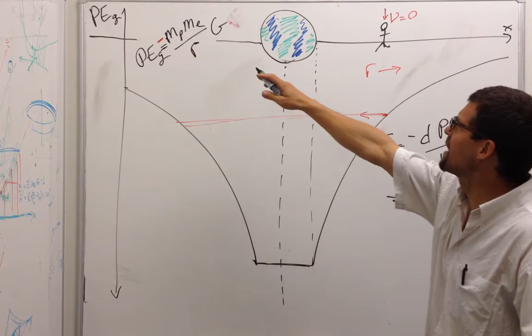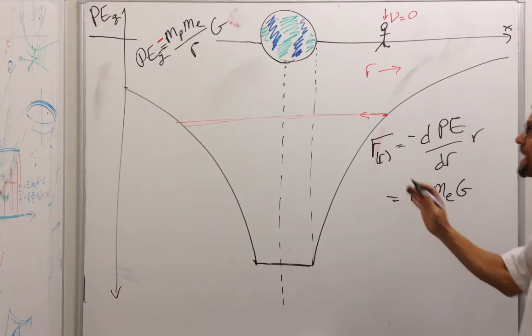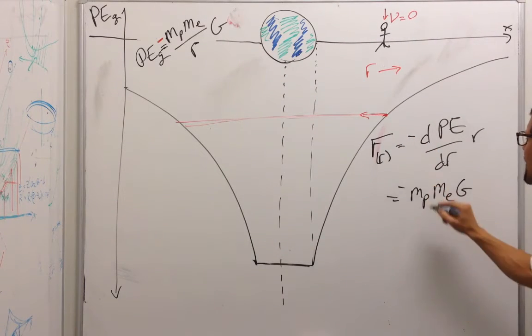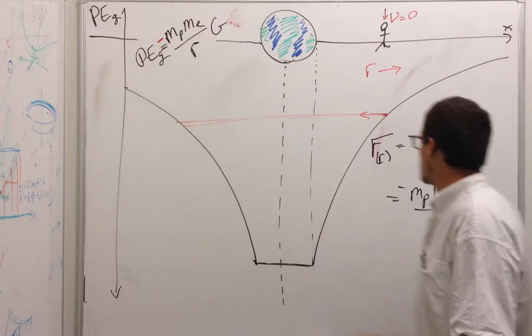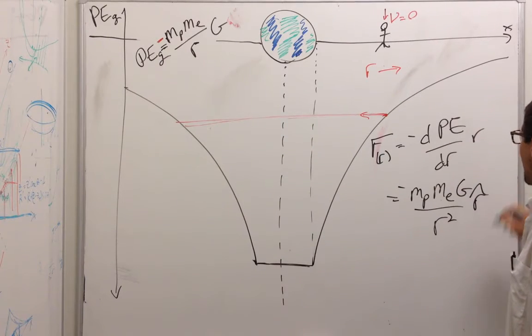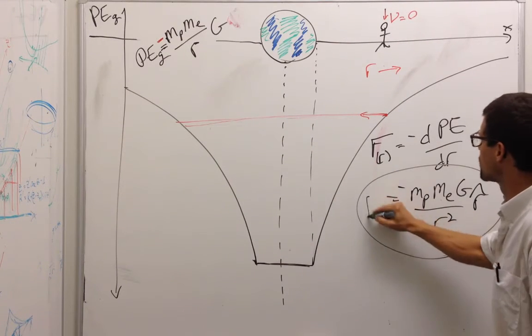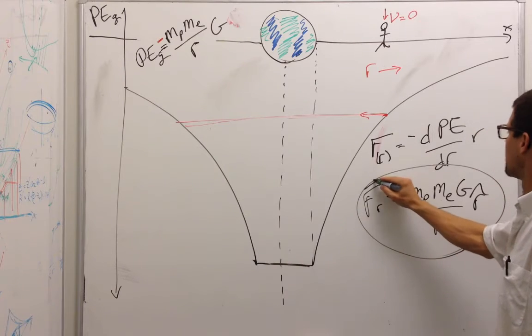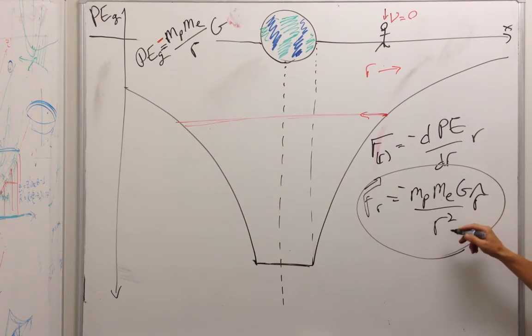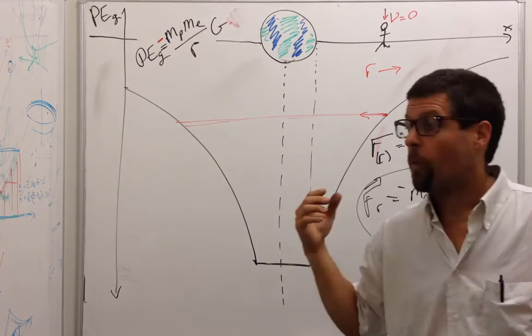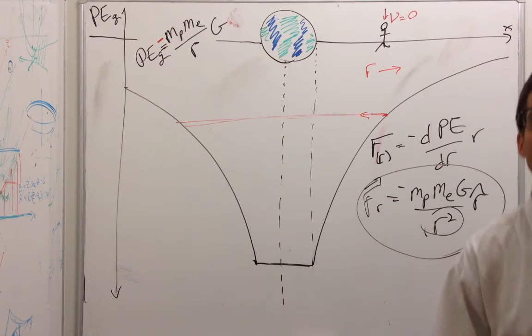So we just take that gradient, we get those three constants, and that's r to the negative one, which gives us negative r to the negative two. And that's a negative there, and negative there, those two cancel. And so what we have is the force in the r-direction is just the product of the masses times g over r squared, the ubiquitous inverse square law in the negative r-direction, the formula for gravitational force that we already knew.